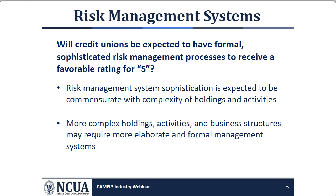Will credit unions be expected to have a formal sophisticated risk management process in order to receive a favorable S rating? Consistent with NCUA's existing interest rate risk supervisory guidance, the level of sophistication of the credit union's risk management process should be commensurate with complexity and level of risk exposure, balance sheet composition, off-balance sheet activities, and specific circumstances. Credit unions with more complex holdings, activities, and business structures may require more elaborate and formalized market risk management processes to receive a rating of one or two in the S component.